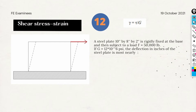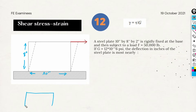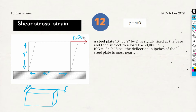Let's start the first practice problem of this review. We have a steel plate with the following dimensions: 10 inches by 8 inches by 2 inches, where 2 inches is the thickness. Let's draw the 3D geometry of the box. This box is subjected to a force F at the top equal to 50,000 pounds or 50 kilo-pounds. The shear modulus is 12 times 10 to the sixth power pounds per square inch.